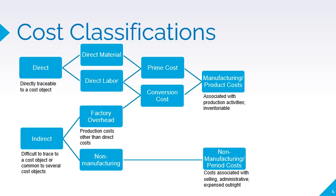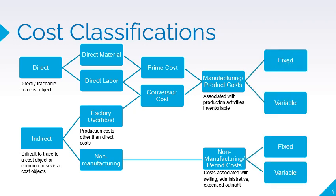Manufacturing and non-manufacturing costs can be further classified into fixed or variable costs. Fixed costs are those that remain constant regardless of changes in activity level, whereas variable costs are those that vary in total as activity level changes.